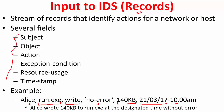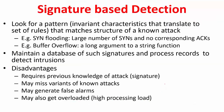So this is a record that you generate and pass to the IDS for inspection. There are essentially two types of detections. One is signature-based detection and another is anomaly-based detection. We'll get to that shortly, but first let's look at signature-based detection.